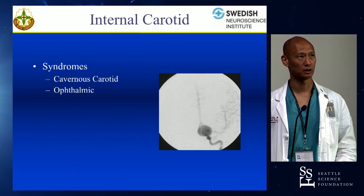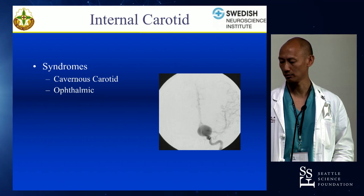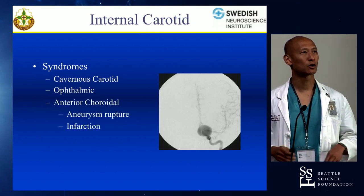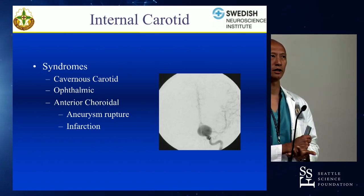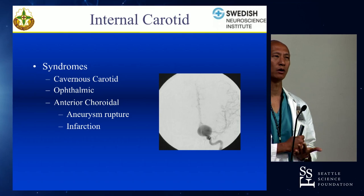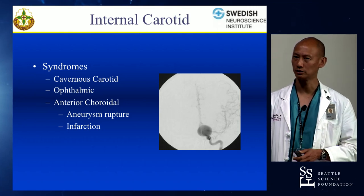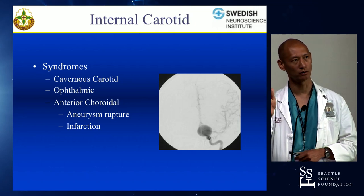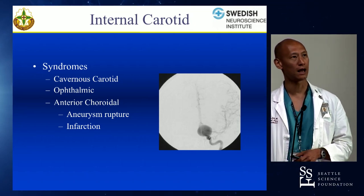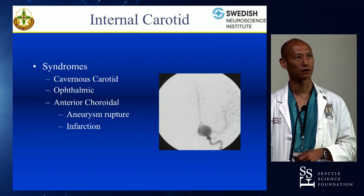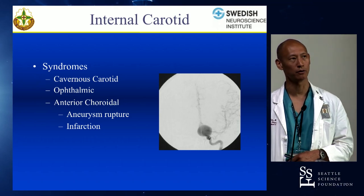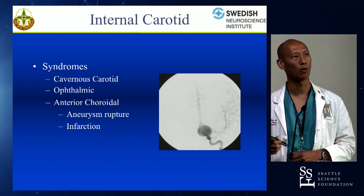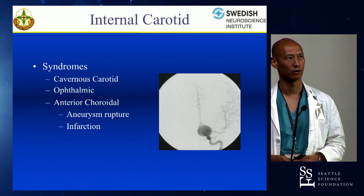Anterior communicating aneurysms can also grow superiorly and compress the chiasm. Anterior choroidal aneurysms are fairly few and far between; you need to be very cautious about them. They're fairly unique in that when they rupture in the right direction — the anterior choroidal tracks posteriorly first and then laterally, entering through the anterior choroidal fissure — blood can enter just the temporal horn. You may present with very little subarachnoid hemorrhage but predominantly blood in the temporal horn, which is very indicative of an anterior choroidal aneurysm.